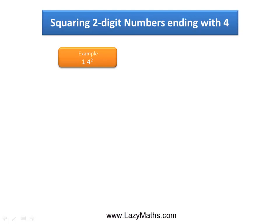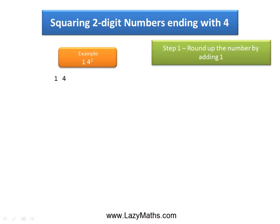Here's an example of squaring any two-digit number ending with 4. Take 14 squared. The first step is to round up 14 by adding 1 to it, and we get 15.